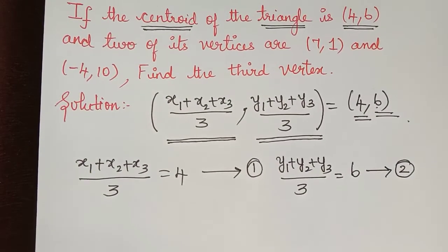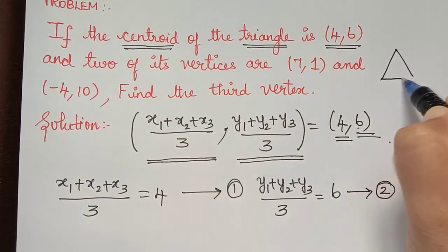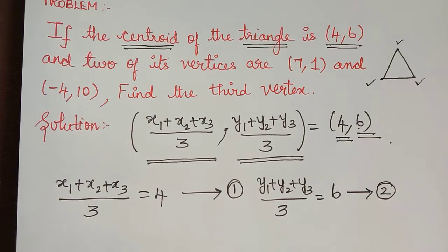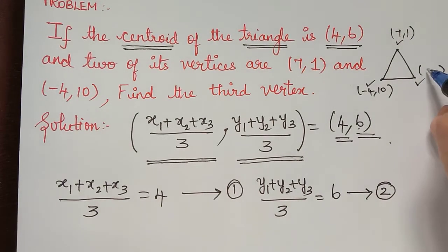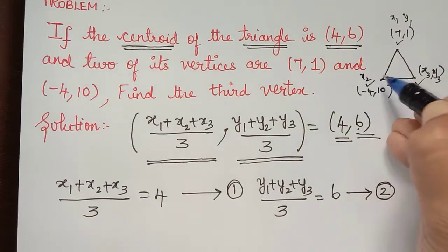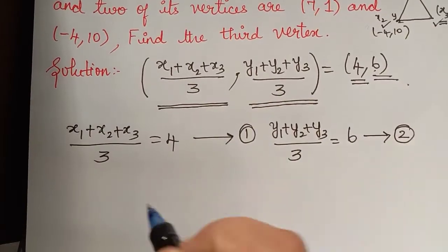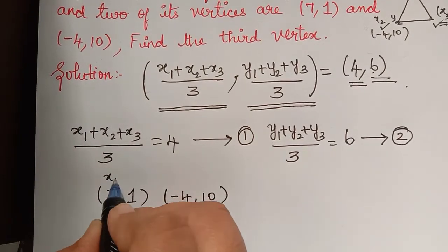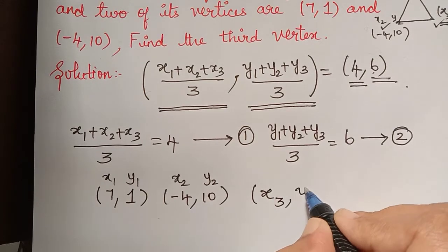The question says they have given us two of the vertices of the triangle and are asking us to find the third vertex. For example, if this is (7, 1) and this is (-4, 10), we have to find the third vertex. Because it is unknown we can take it as (x3, y3), with (7, 1) as (x1, y1) and (-4, 10) as (x2, y2).